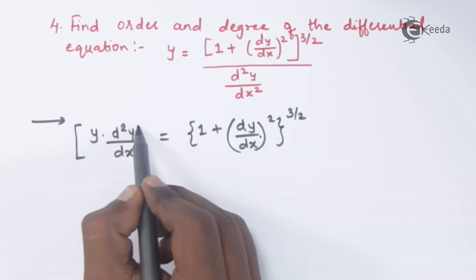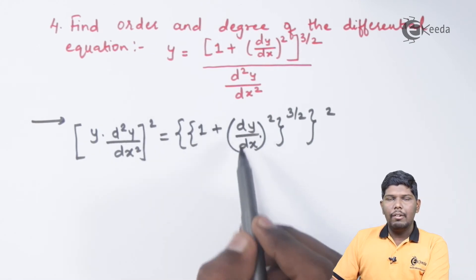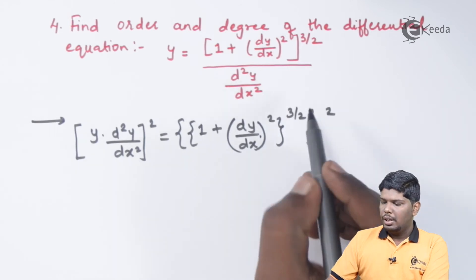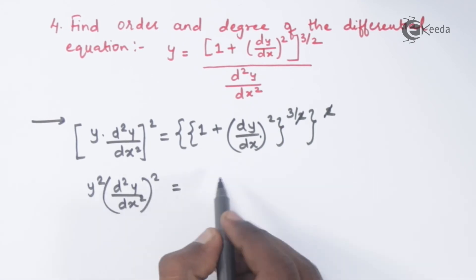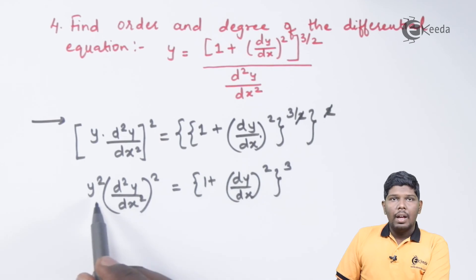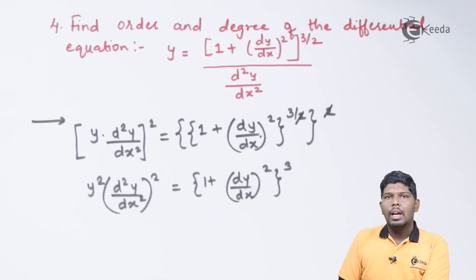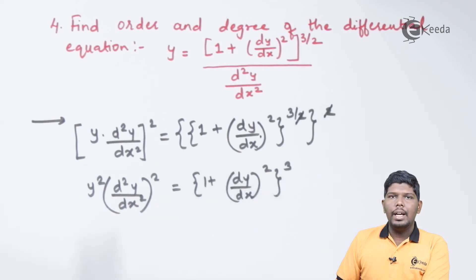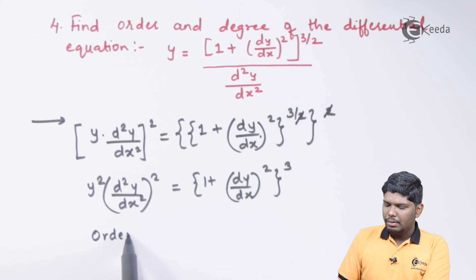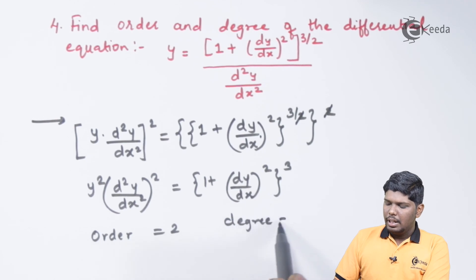After squaring both sides, this gives y² · (d²y/dx²)² = (1 + (dy/dx)²)^(3/2 · 2) = (1 + (dy/dx)²)³. The square and square root cancel, leaving y²(d²y/dx²)² = (1 + (dy/dx)²)³. We now have no fractional power. The highest order derivative is d²y/dx², and dy/dx is the first order derivative, so the highest order is 2. The power of the highest order derivative is 2, so the degree is also 2.